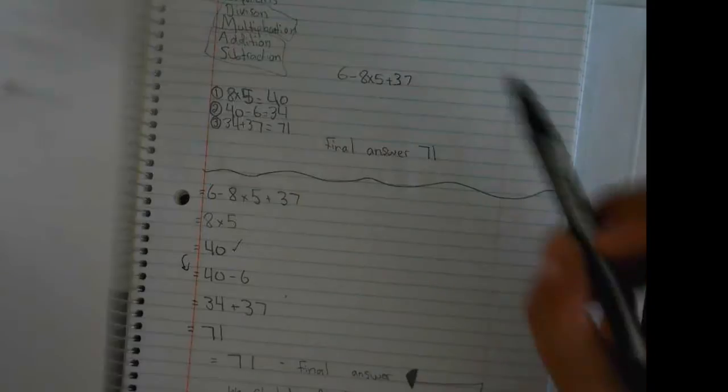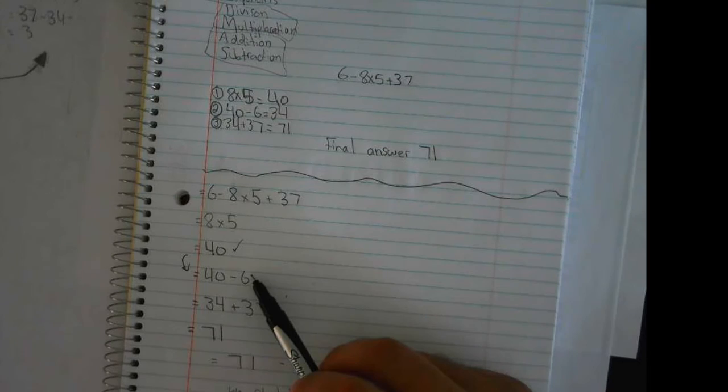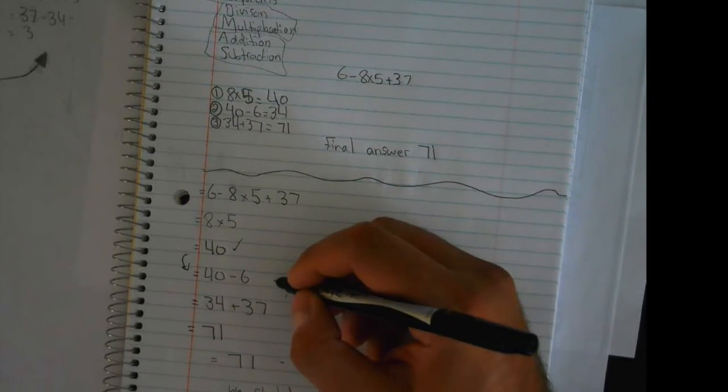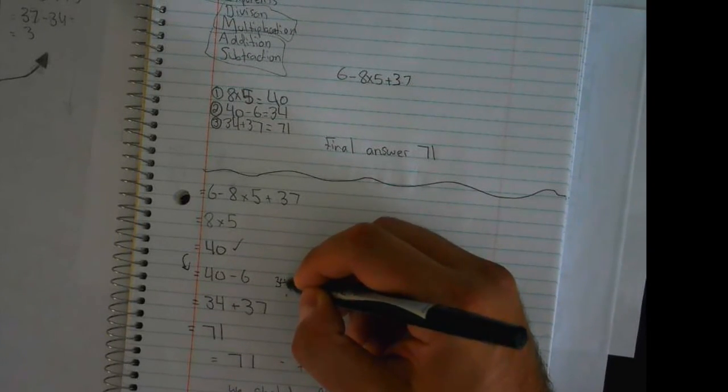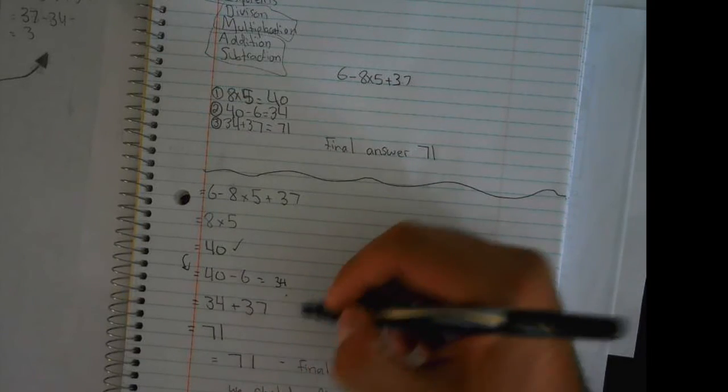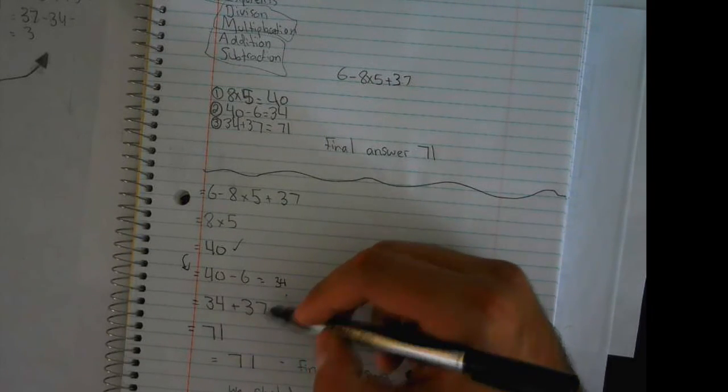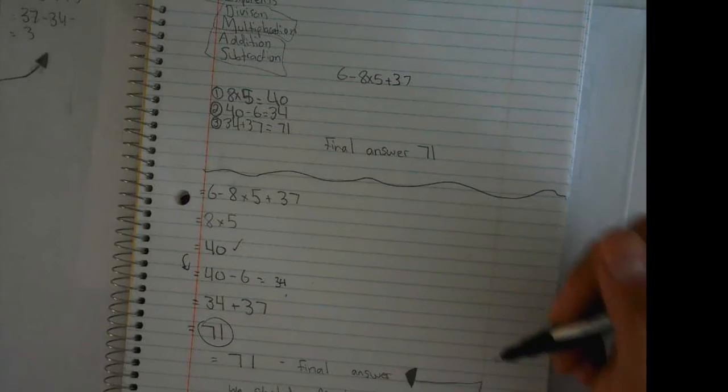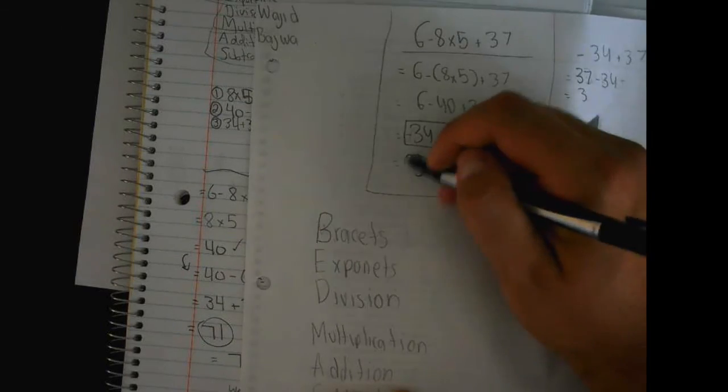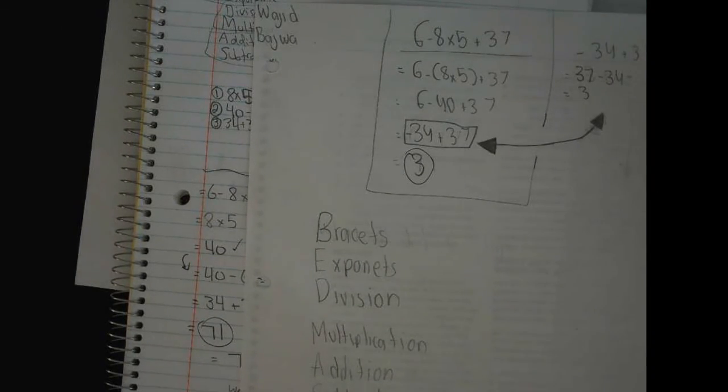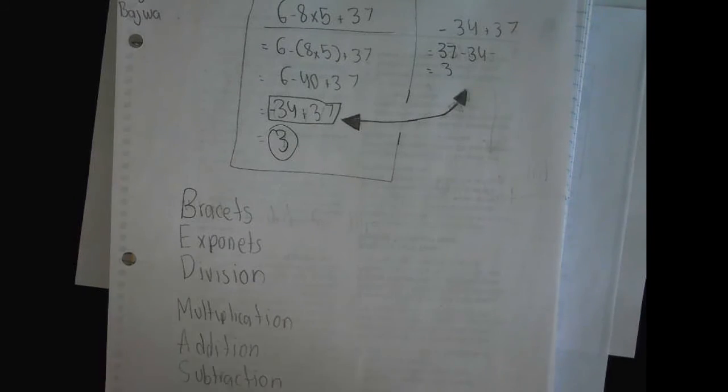The other group did 40 minus 6. It gives you an answer of 34. This equals 34. So you have 34 plus 37, the answer is 71. That's a huge difference than what is the correct answer.